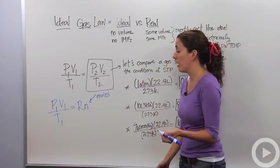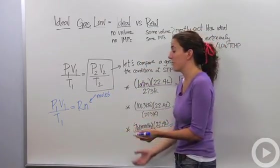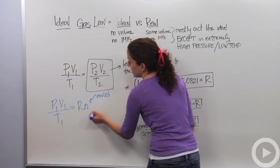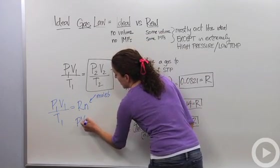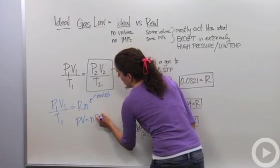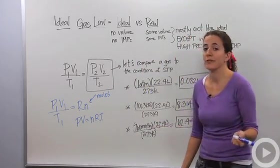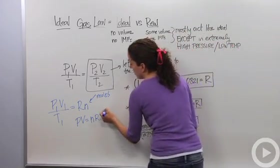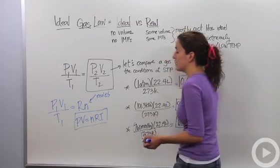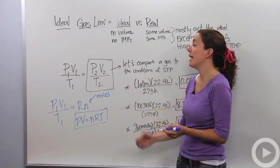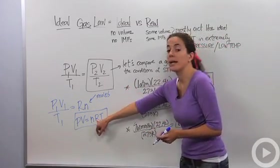So if I rearrange this to make it much easier to write down and remember, I'm going to rearrange this and bring the T over. So I'm going to say PV equals nRT. Some people call it Pibner to remember the ideal gas law. So this combination of things is the ideal gas law. It's basically just the combined gas law rearranged using the conditions of STP for R.